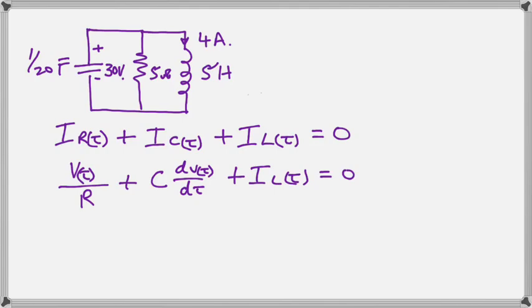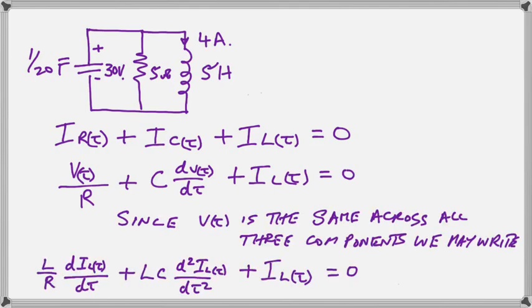Now the voltage is the same across all three components. So therefore we may take the voltage across the coil and substitute the representative equation into the others to give us a differential equation in the current through the coil.